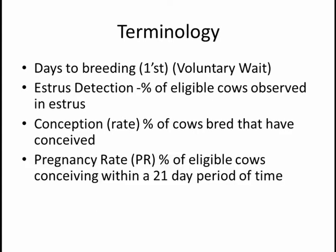Pregnancy rate is the percent of eligible cows conceiving within a 21-day period of time. So one can think of it as the multiplication of estrus detection rate times conception will equal pregnancy rate. Now there are other ways of calculating it using concepts in survival analysis and actuarial analysis to calculate a more accurate pregnancy rate. But in essence, it is the percentage of eligible cows conceiving within a 21-day period of time.